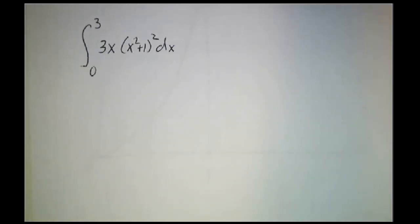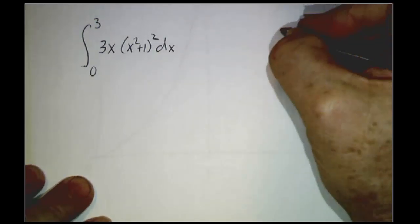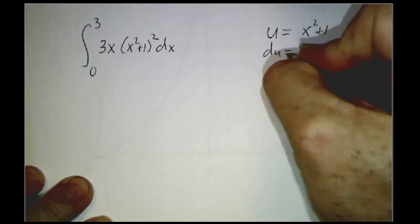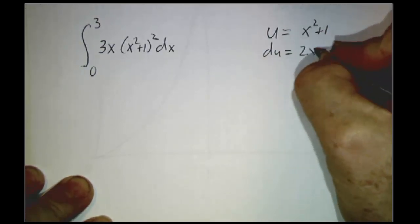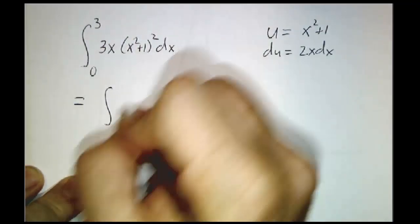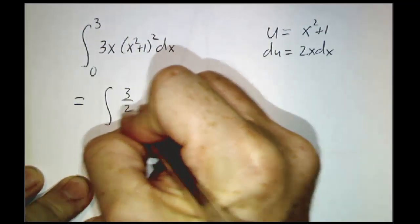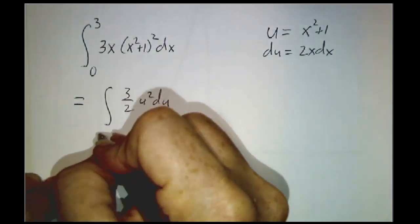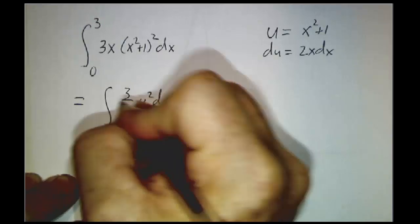So let's see why they're the same. Let's work a slightly different example for this. Let's suppose we want to know the integral from 0 to 3 of 3x times x squared plus 1 squared dx. We want u to be x squared plus 1. du is 2x dx. And so this winds up being the integral of 3 halves u squared du.